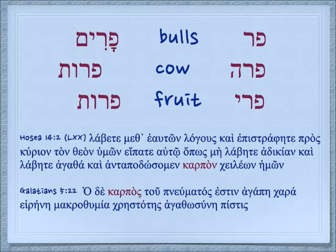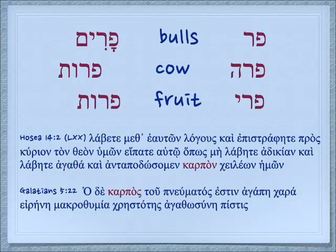But if we look in the Septuagint in Hosea 14:2, you see the word highlighted there is karpon, which means fruit. And so it seems like the scripture in Hosea is referring to the fruit of our lips. Some of the translations actually say that. The other explanations kind of stretch it out and say the calves are sacrifices, so it's talking about the sacrifices of our lips in an allegorical sense. I've given you the word also from Galatians 5:22, and you know it's about the fruit of the spirit — that is also karpos. Why is one karpos and one karpon? Because they're in two different cases.